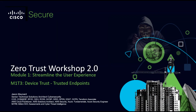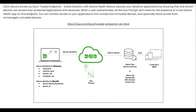Zero to Hero Power Workshop 2.0, Module 1: Streamline the User Experience — Device Trust and Trusted Endpoints. Cisco Secure Access by Duo's Trusted Endpoints with Active Directory and Device Health features secures your sensitive applications by ensuring that only known devices can access Duo-protected applications and resources. When a user authenticates via the Duo prompt, it will check the presence of the Duo Device Health app on the endpoint. You can monitor access from trusted and untrusted devices, and optionally block access from unmanaged or untrusted devices.